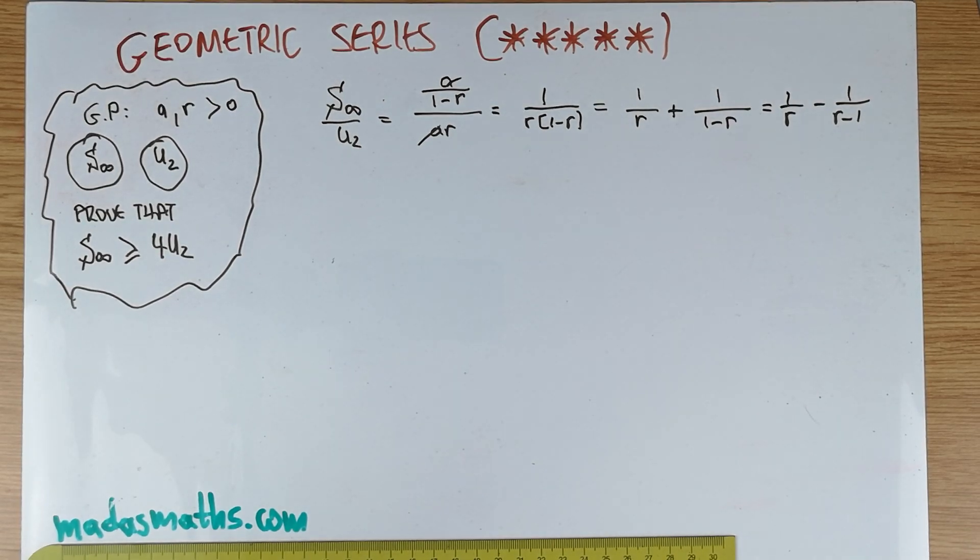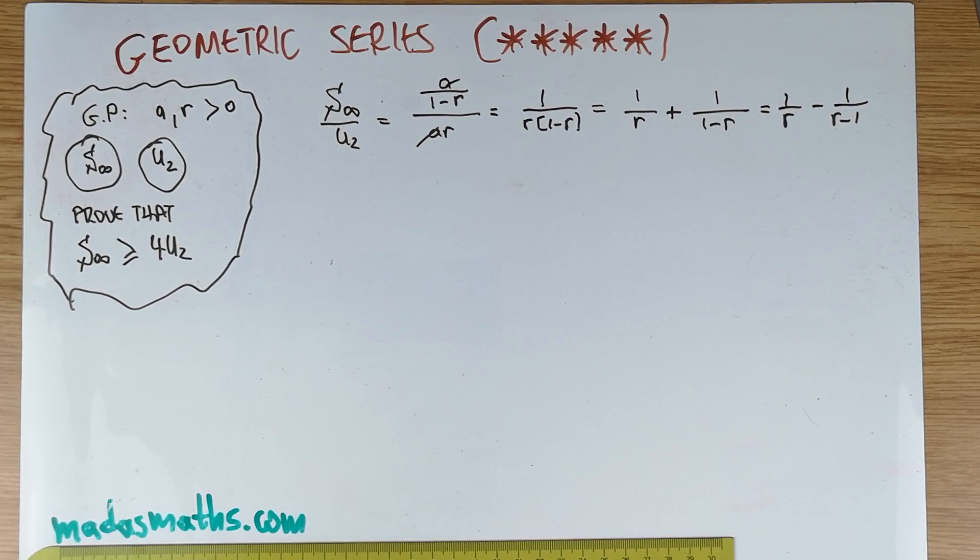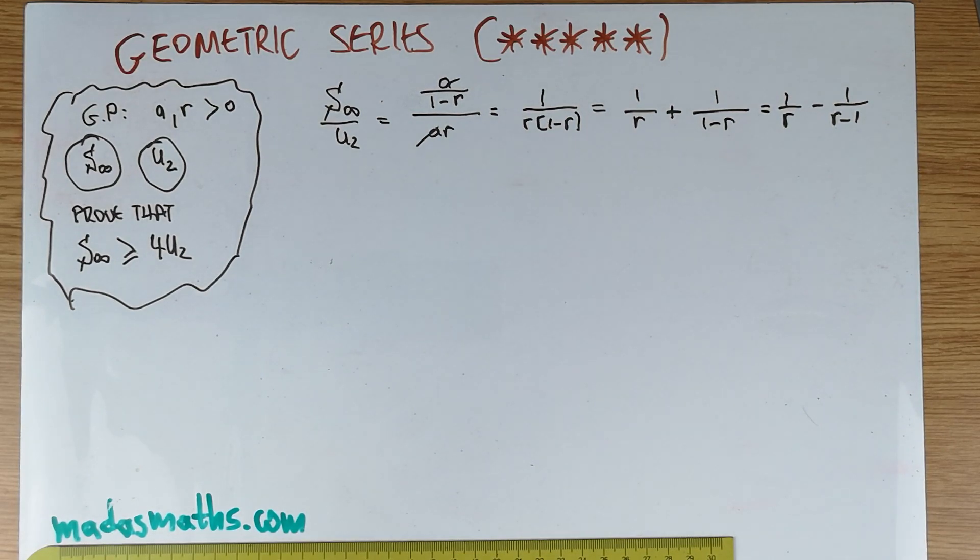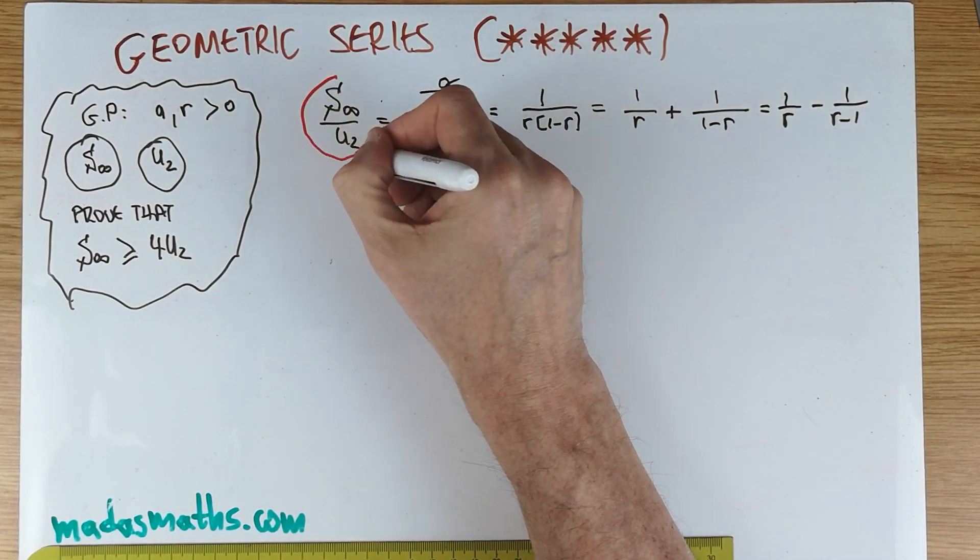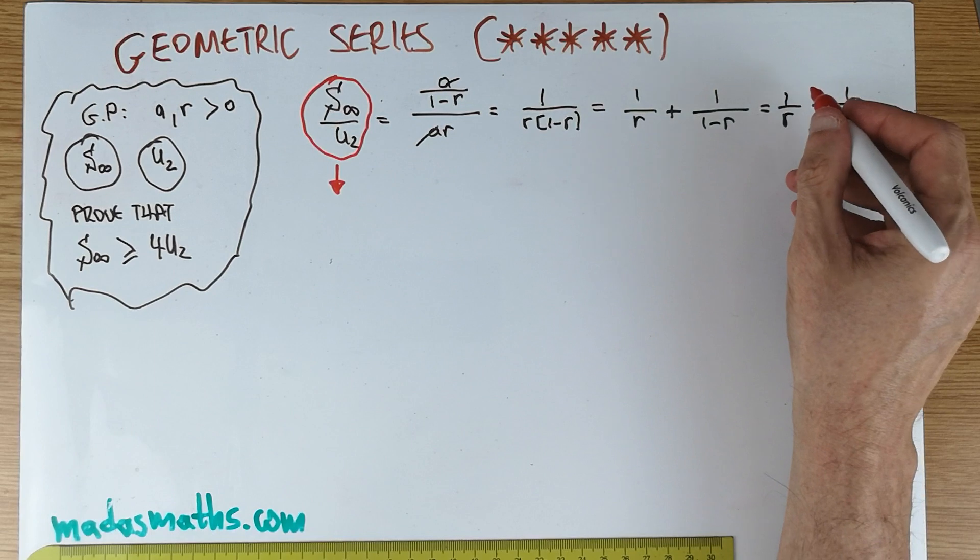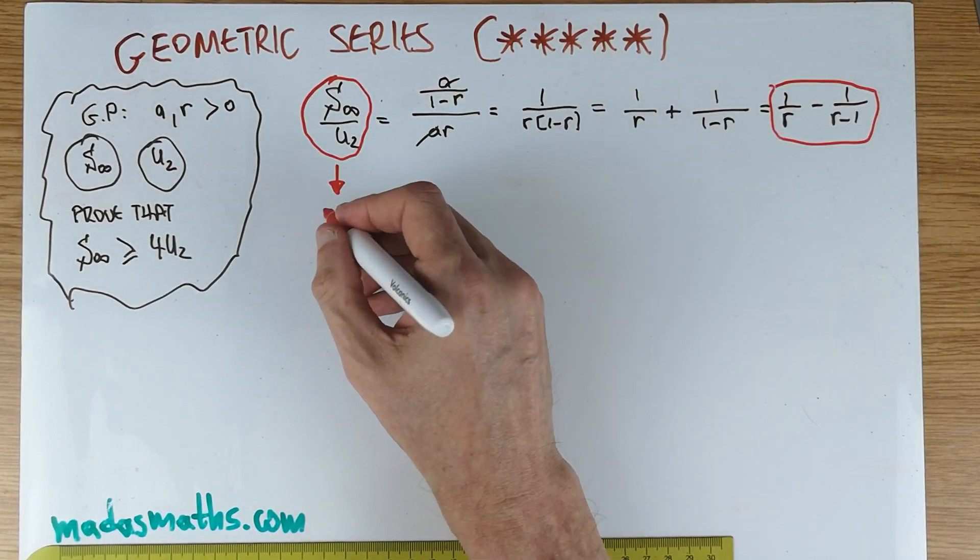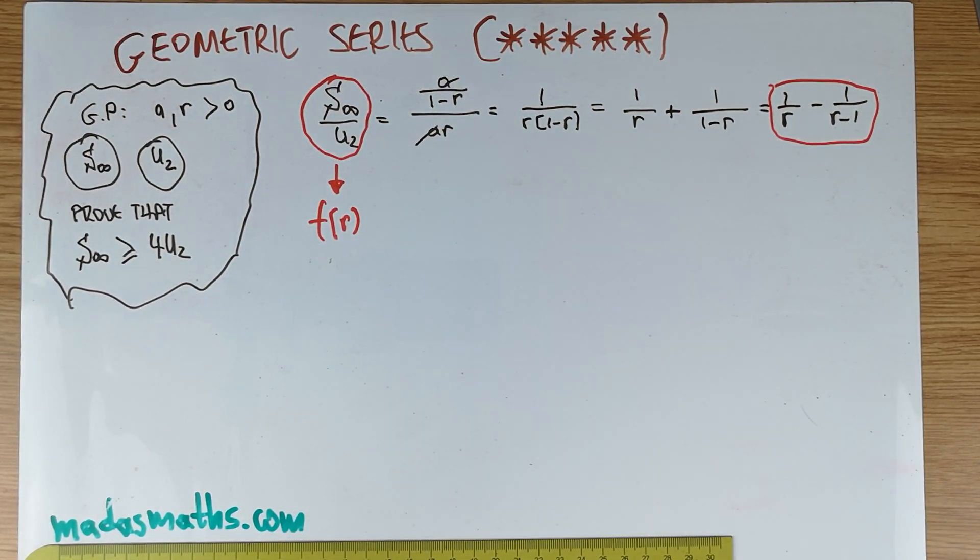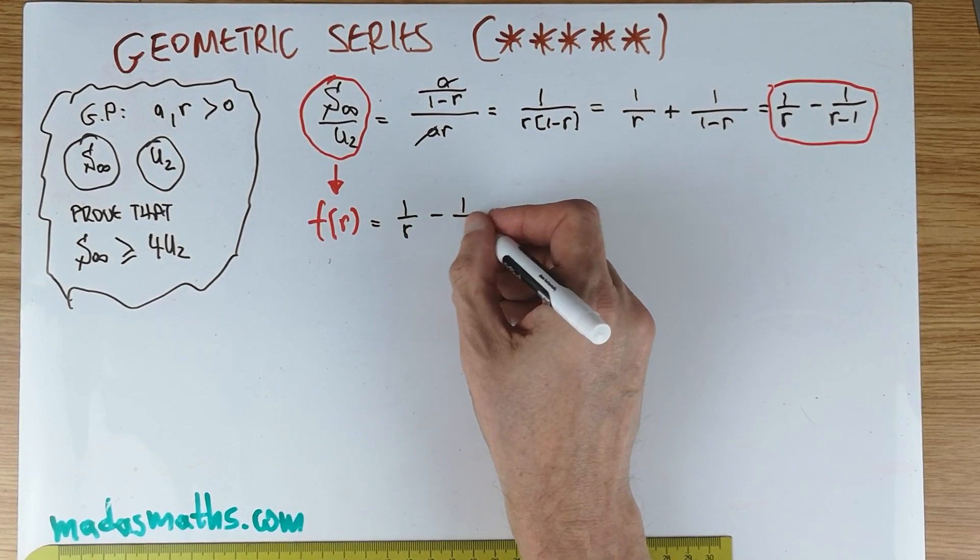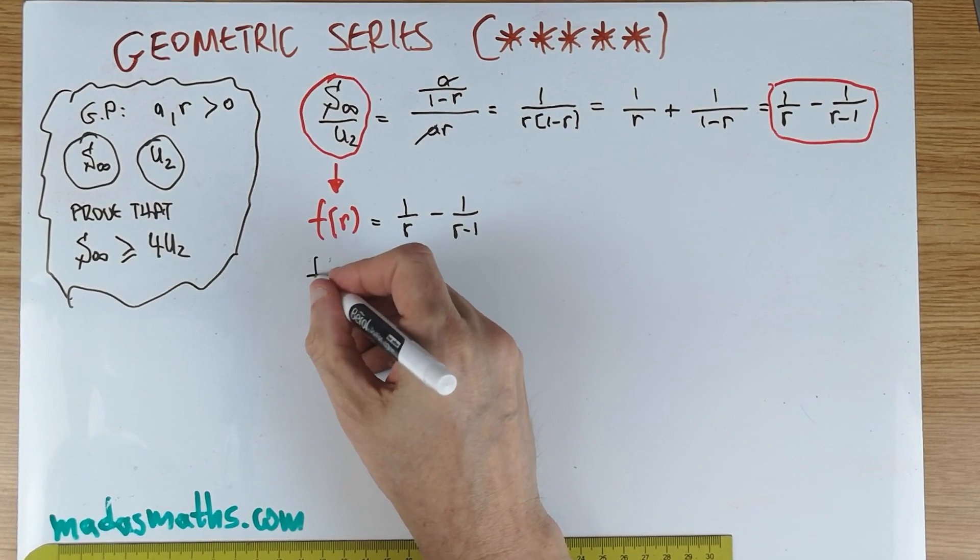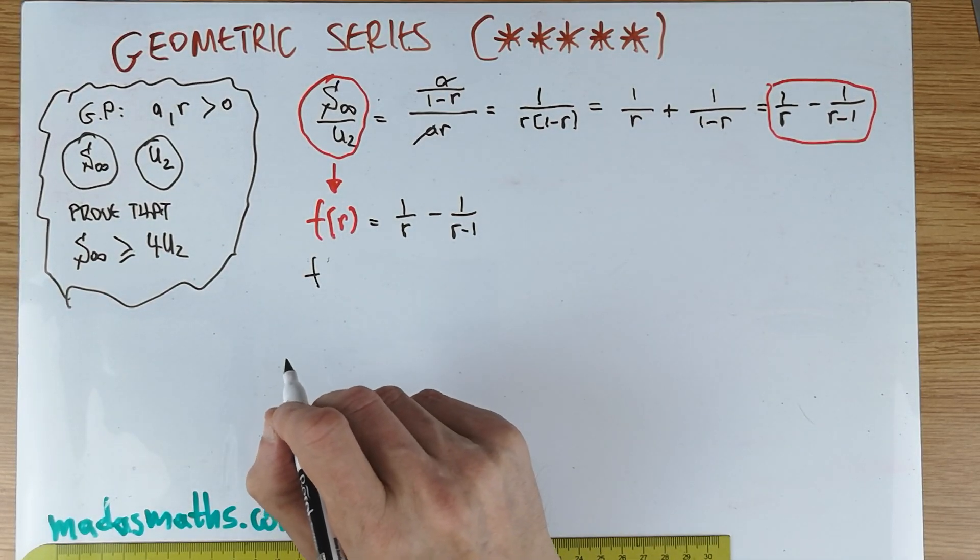So what have I done so far? Have I done something meaningful? At first glance, it looks like I'm playing for time and I'm not really going anywhere. But if you think about this quantity here, this is the required ratio that I'm trying to consider. And look what it turned out to be: it's actually a function of R. And this function of R is, of course, one over R minus one over R minus one. And for this, we can plot, we can do calculus. We can do whatever we need to do. So I'll just use a calculus method, which is probably the easiest thing to do in something like this.